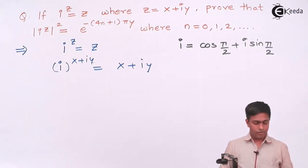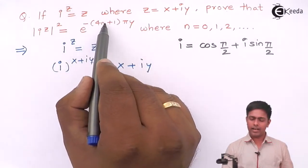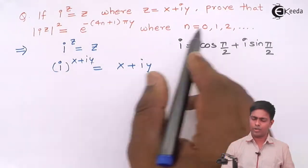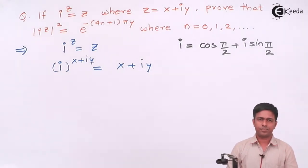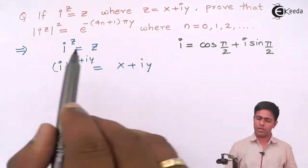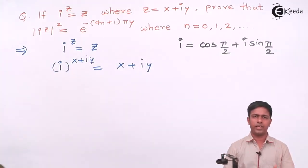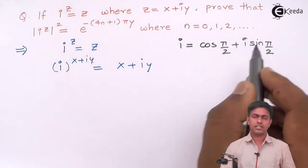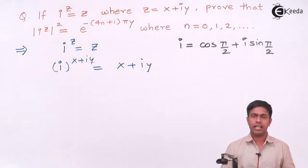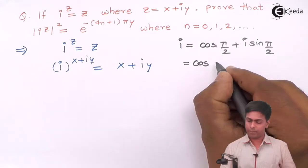But be careful — if we plug e raised to i·π/2 directly, we will never get n in the solution. We need to bring n in, and n comes from the general polar form. So we must add 2nπ to the angle. That means i equals cos(2nπ + π/2) plus i·sin(2nπ + π/2), which is the general polar form.